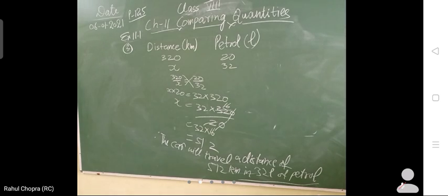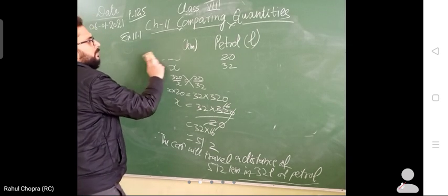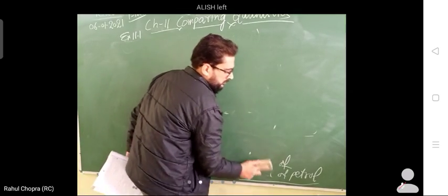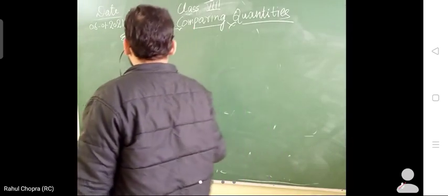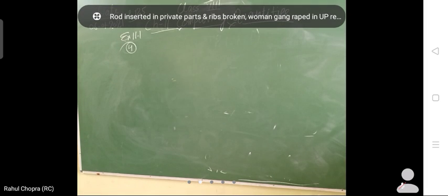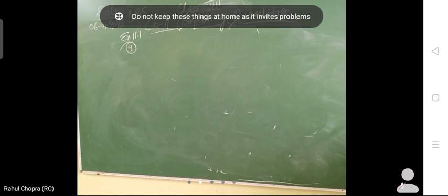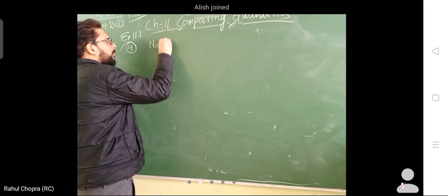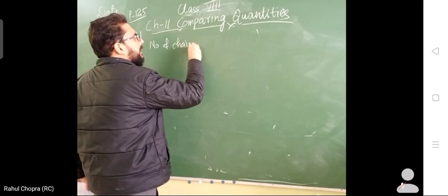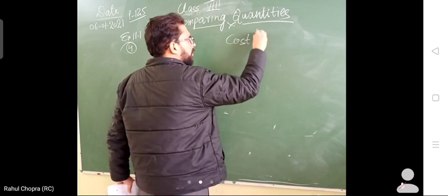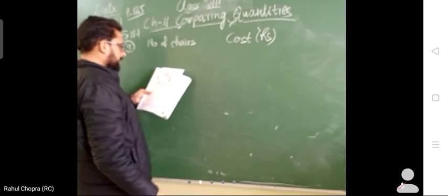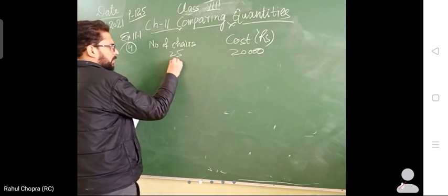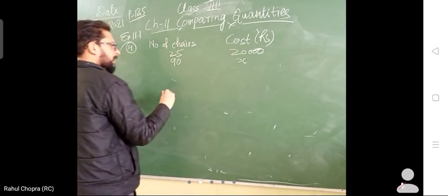Now I will explain you question number 4. The cost of 25 chairs. Here we are having number of chairs and here cost, given in rupees. Question is: the cost of 25 chairs is rupees 20,000. You have to find the cost of 90 chairs. Cost is not known, write x.